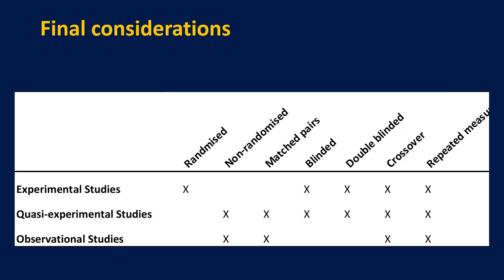We have crossover — in a crossover study, a group that did a training intervention and a group that didn't are swapped over, so the group that didn't train now trains, and vice versa. And then finally repeated measures, where participants have the measure repeated upon them. There is no reason why you couldn't have a matched pairs double-blinded crossover repeated measures design — it's possible. But can you see that becomes a quasi-experimental study? Because the one thing that makes a study experimental is randomisation, which is the highest order of experimental design. Remember, it only really works if you've got large datasets.